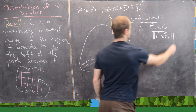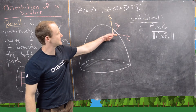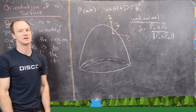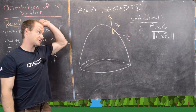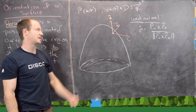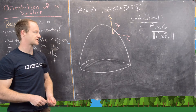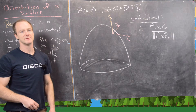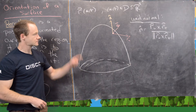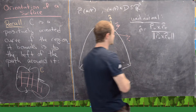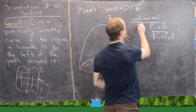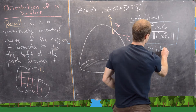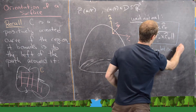So why is that a normal vector? We're taking two things that are tangent to the surface — in other words, parallel to the surface — and we take their cross product, which gives us something perpendicular to each of them and therefore perpendicular to the surface. Then we divide by the magnitude in order to make it into a unit vector. This unit normal vector is what we think of technically as the orientation of the surface.